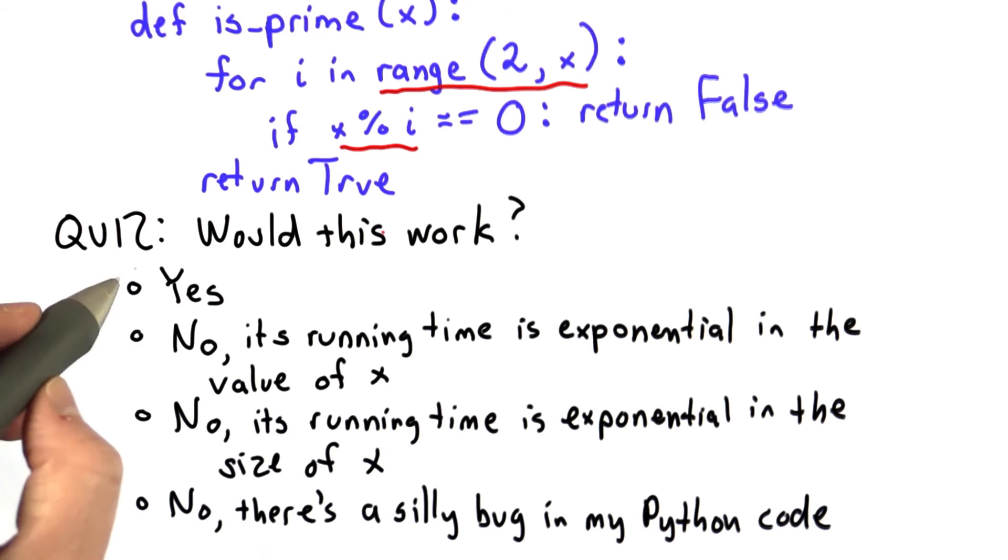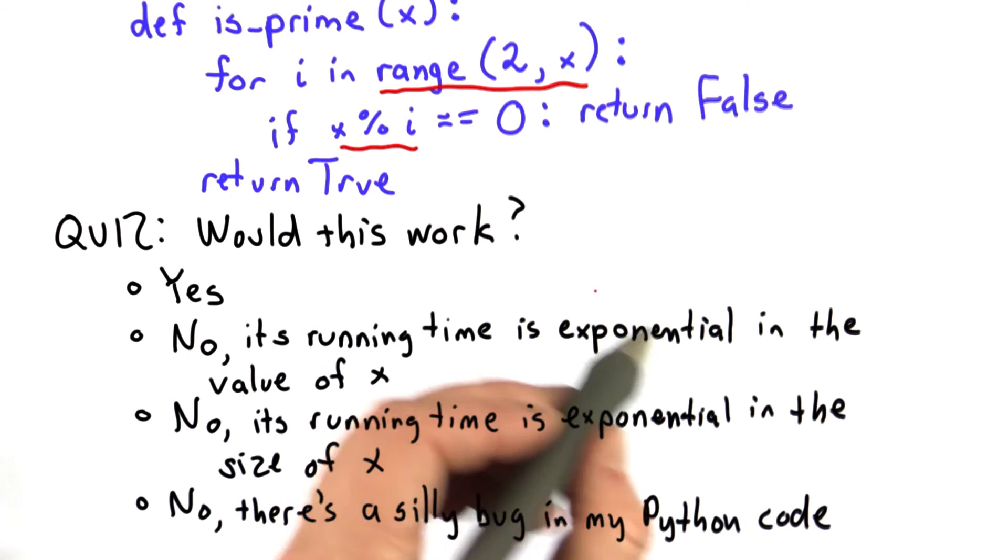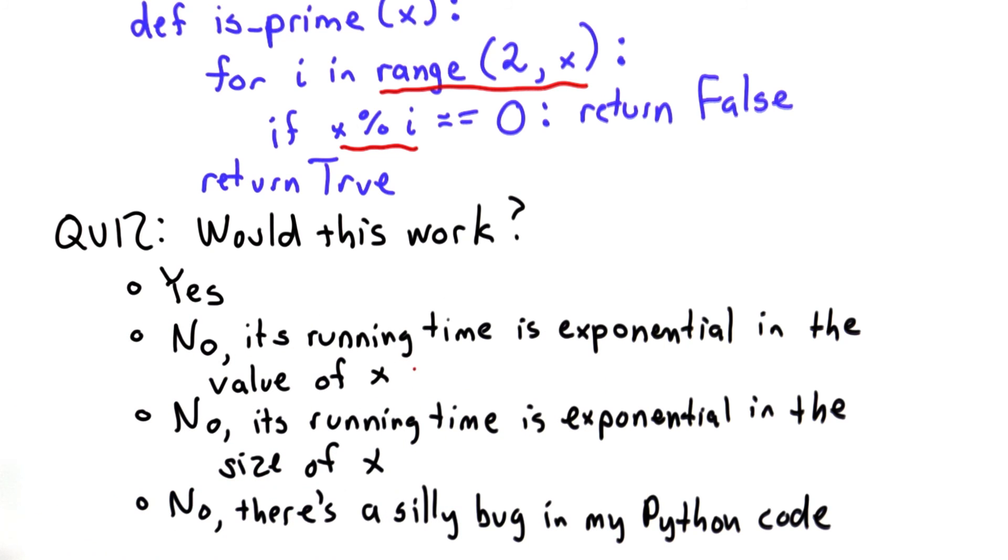So the question is, would this work? The possible answers are yes, this will work fine. No, it's too slow because the running time is exponential in the value of x. No, because it's too slow because the running time is exponential in the size of x. And no, because there's a silly bug in my Python code.